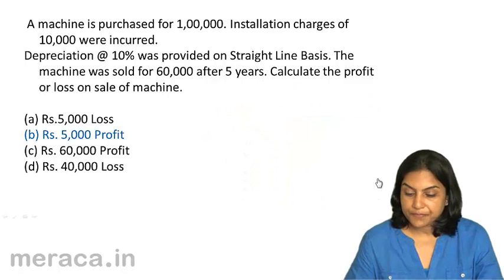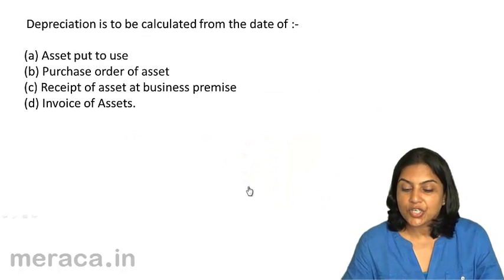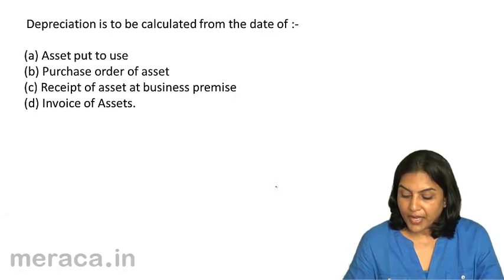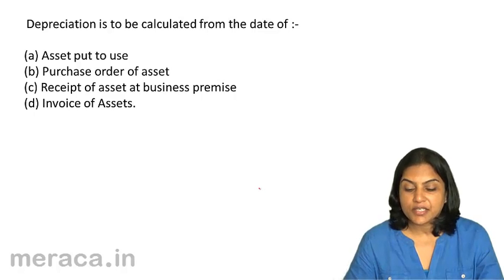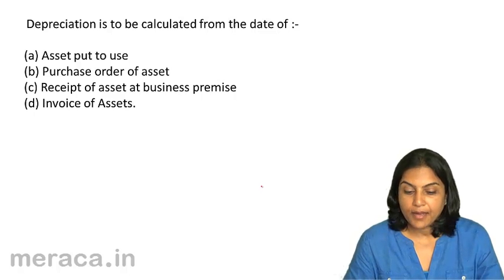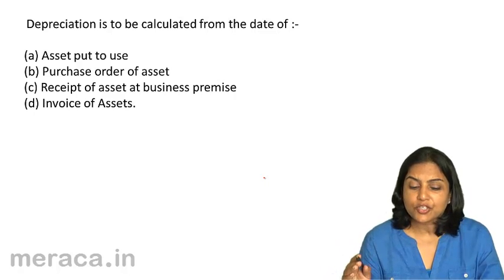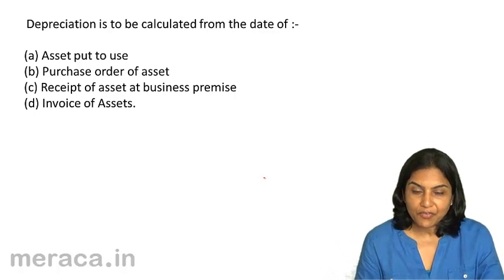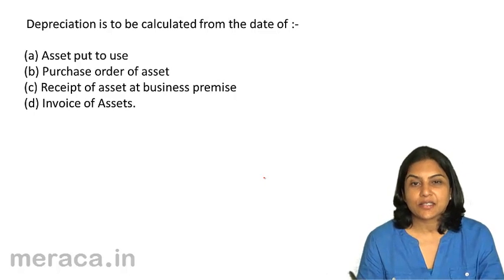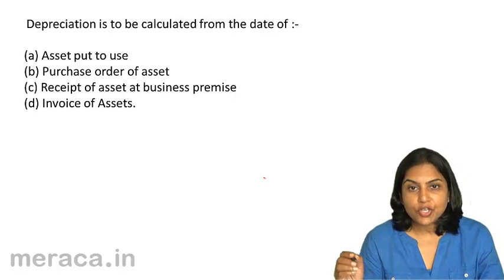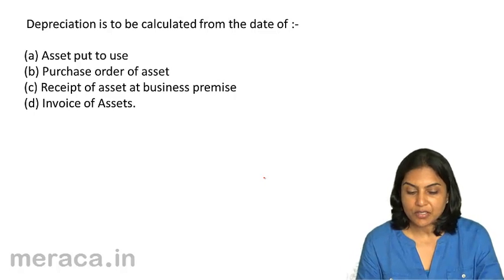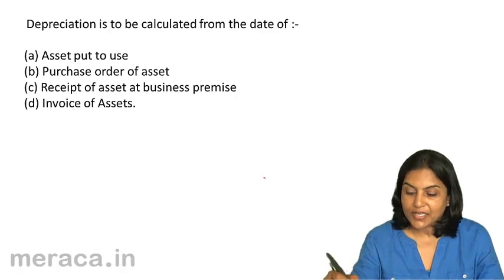Next question: depreciation is to be calculated from the date of — A. asset put to use, B. purchase order of asset, C. receipt of asset at business premises, D. invoice of assets. Depreciation is to be calculated from the date that the asset is put to use — we choose the answer closest to the most accurate answer.